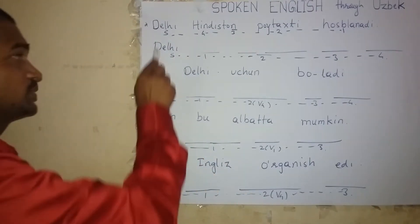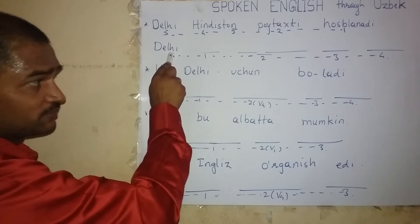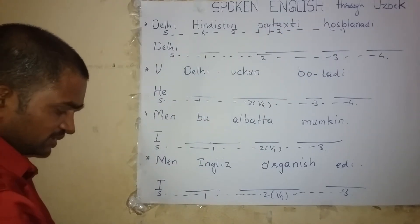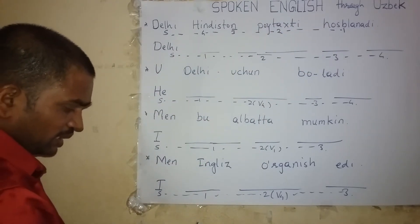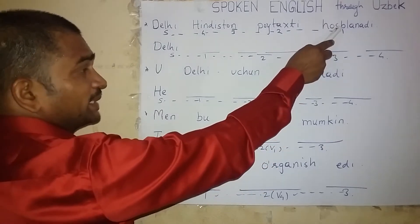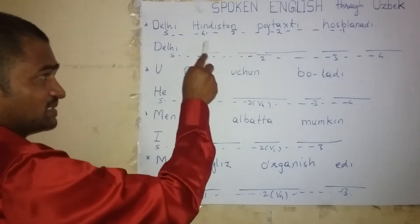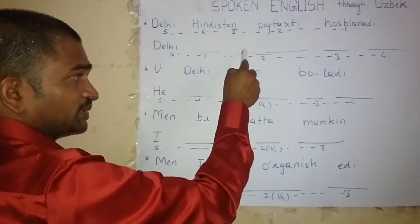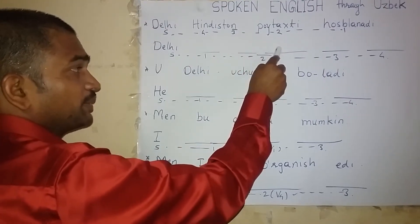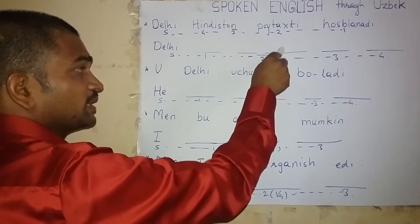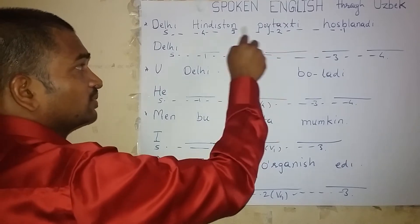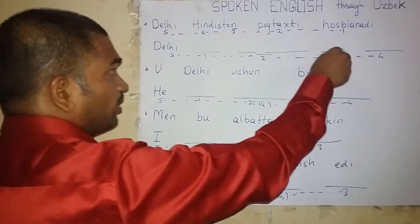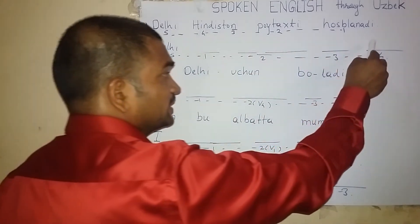For example: first, write the word for Delhi — D-E-L-H-I. Then write the word for Husbandi — 'is.' The word for Poetaxi — 'the capital' — T-H-E, C-A-P-I-T-A-L. Then 'of' for on, and for Hindustan — 'India' — I-N-D-I-A.